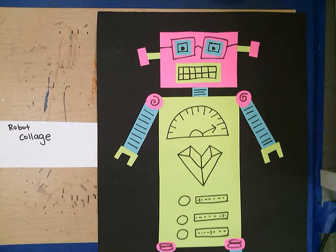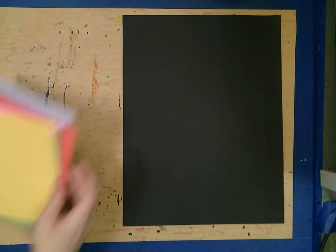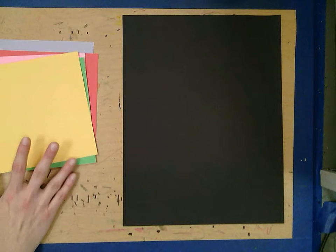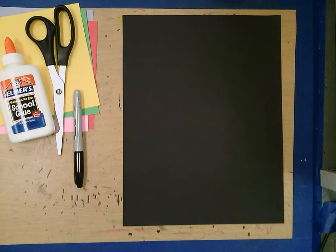Hey gator artists, today I'm going to show you how to make a fun robot collage. Let's talk about what supplies we're going to need. You're going to need paper, it can be whatever color you want. I've got a piece of black for my background and then I have a few different colors of scraps that I just had around.